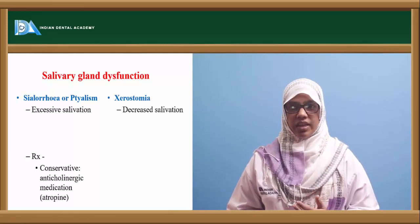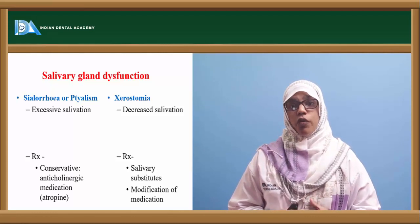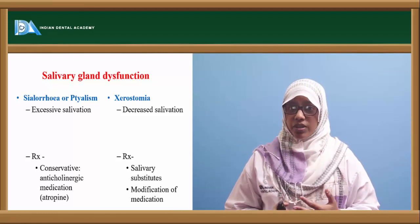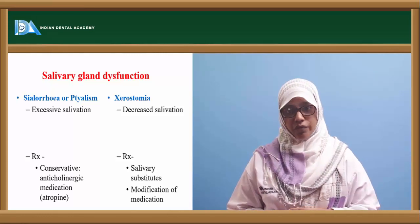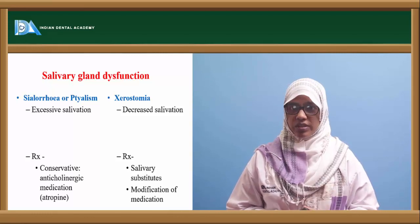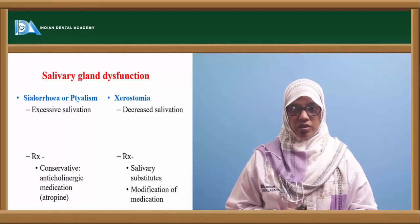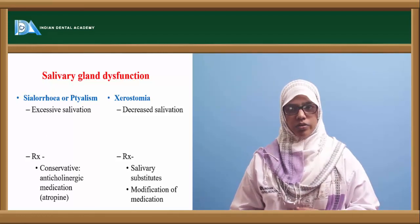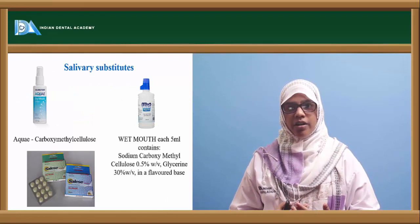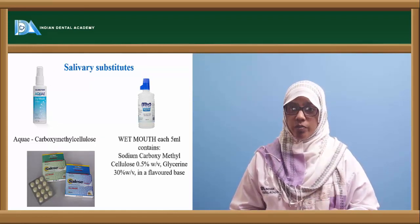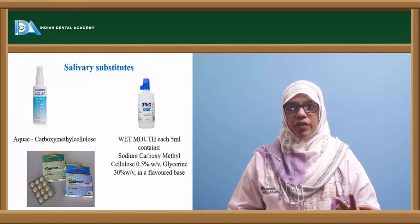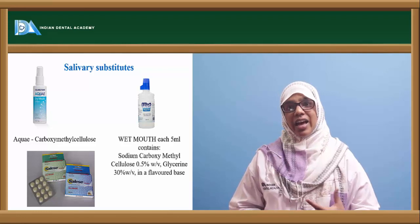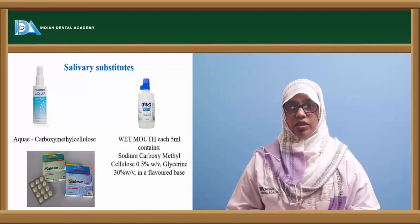Xerostomia is a decrease in salivation or dry mouth syndrome. It can be caused by medications the patient is taking — such as antihypertensive, antidepressant, or antihistamine medications, all of which decrease salivary flow — or because of radiation therapy. Treatment involves giving salivary substitutes and modifying the causative medications. Commonly available salivary substitutes are carboxymethyl cellulose, available as spray, mouthwash, or tablet. The mouthwash contains 5 ml of sodium carboxymethyl cellulose with glycerin and a flavoring agent to decrease the xerostomia effect.